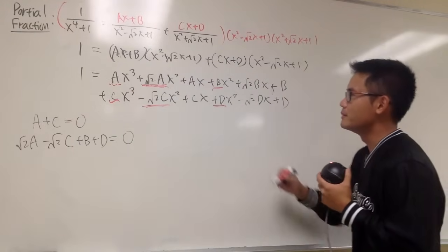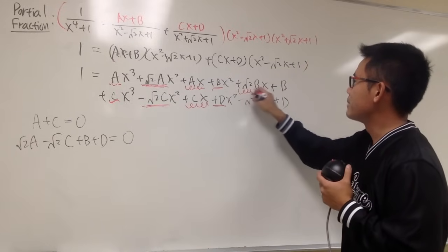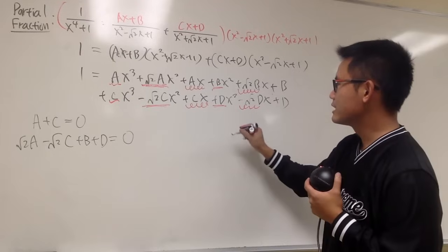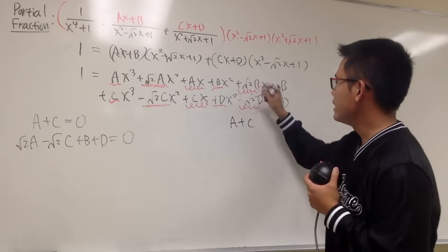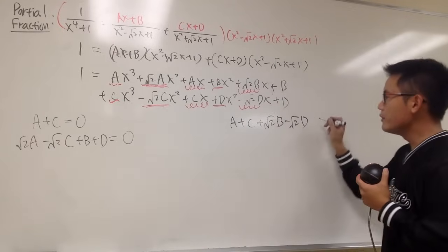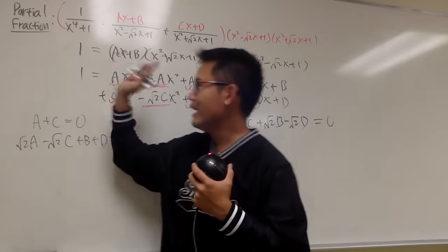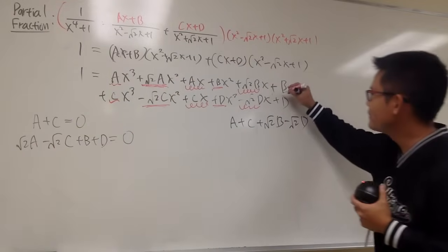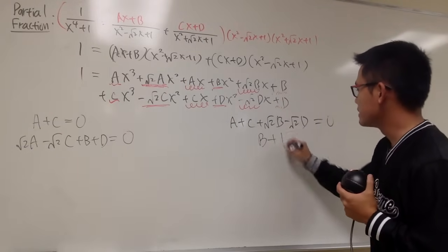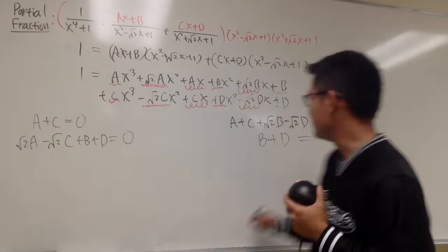For the x terms: a plus c plus square root of 2b minus square root of 2d equals 0, because on the left-hand side there is no x coefficient. And the constant term b plus d equals 1, because on the left-hand side we do have the constant 1. So we have 4 equations with 4 unknowns.